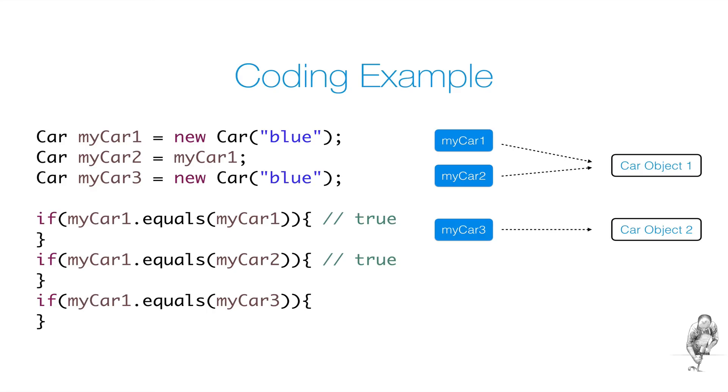Finally, we compare the two blue cars myCar1 and myCar3. What will this return? Pause the video and think about it once again. Unlike you probably thought, this still returns false, even though we compare two equal blue cars. Why is that?